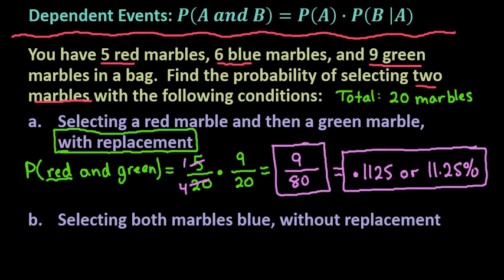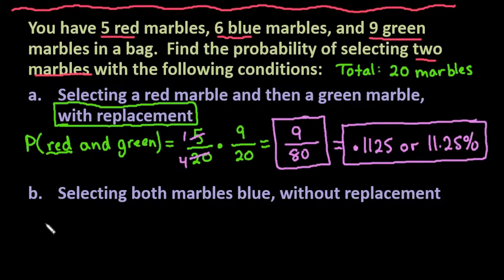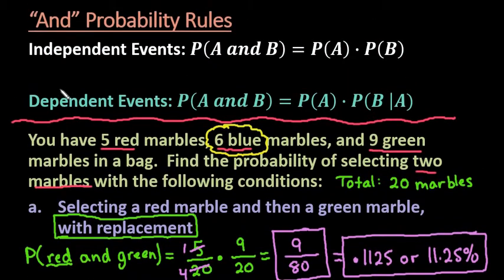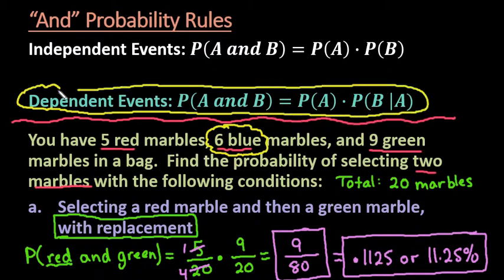Now let's look at a second example. We're going to find the probability of selecting both marbles as blue — a blue marble followed by a blue marble. We have a total of 6 blue marbles out of 20, so the first probability is 6 out of 20. This time we're not replacing it, so we're using the dependent events rule: the probability of A times the probability of B given that A has already occurred.